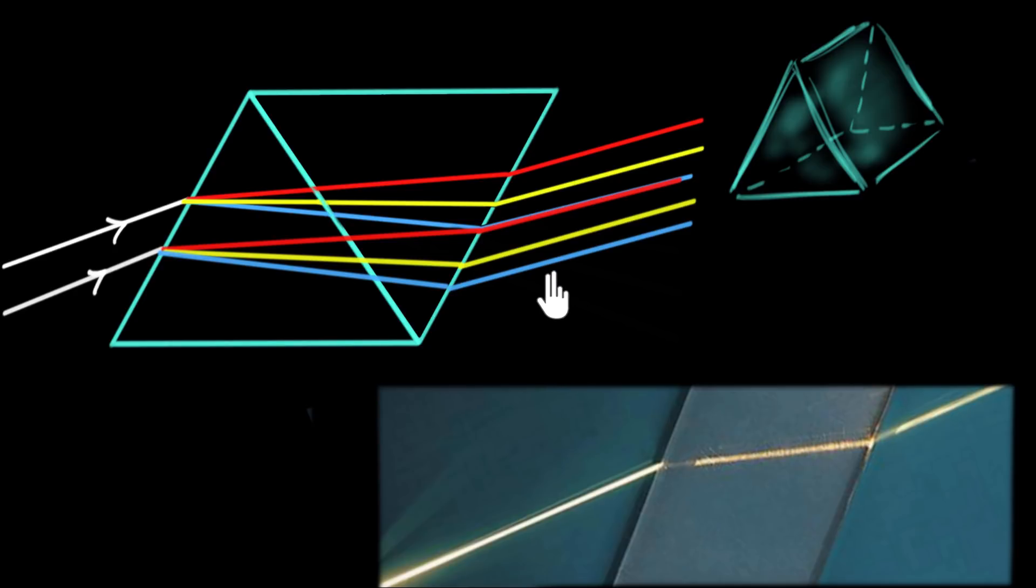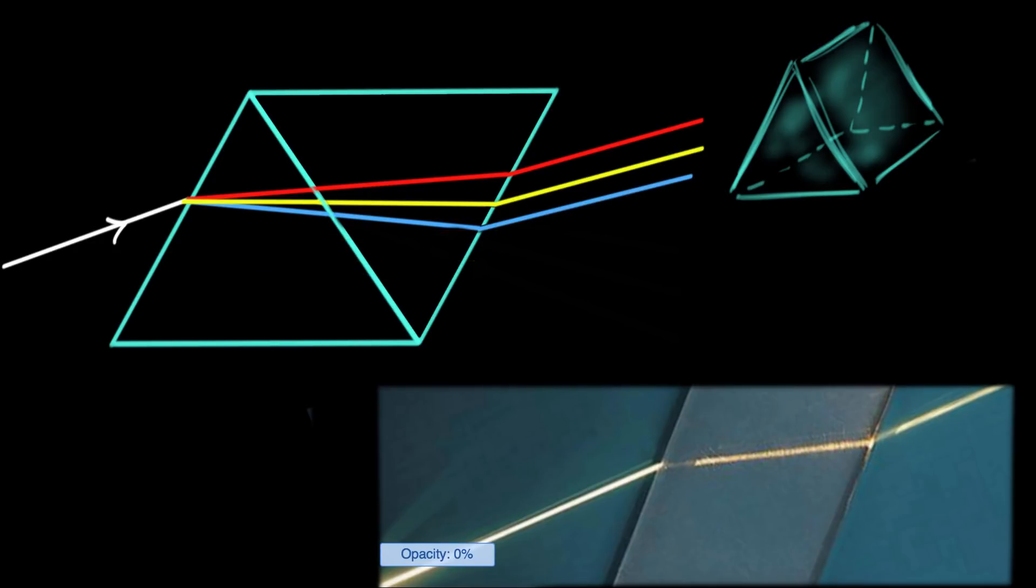So maybe that's how Newton concluded that white light is not a separate color, white is not a separate color. The prism is not really creating other colors. White is a combination, a mixture, of all the colors of the rainbow. And maybe that's how Newton realized what the prism is really doing. It's just bending the light differently.